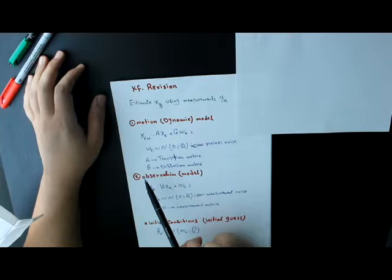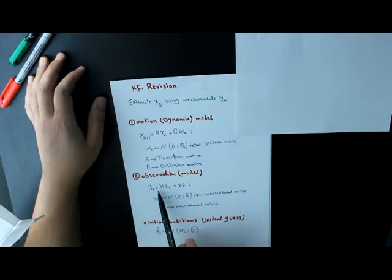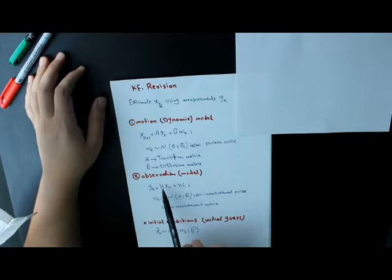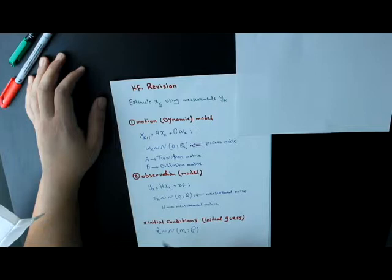The second model is called observation model, and it describes how my measurements are a function of my state vector. As a rule, we don't have any ideal sensors, and every sensor, every measurement from any sensor is noisy, so we added this measurement noise.